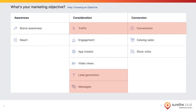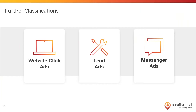Depending on the objective you choose, you'll get different ad types. A traffic ad or conversion ad will become a website click ad, sending people to a page off Facebook where they can fill out a form or read a blog post. These are optimized to show to people who Facebook knows are more likely to click on ads or convert, based on your objective. Facebook tracks user behavior to know who's more likely to click based on past behavior.